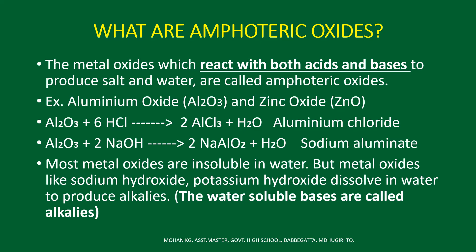Here you can notice some important chemical reactions. Aluminum oxide reacts with both hydrochloric acid and sodium hydroxide, producing the respective salt and water. In the first reaction, aluminum chloride (AlCl₃) is formed. In the second reaction, sodium aluminate (NaAlO₂) is formed.